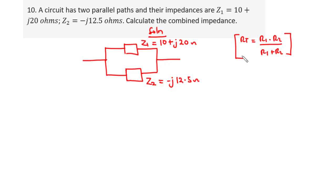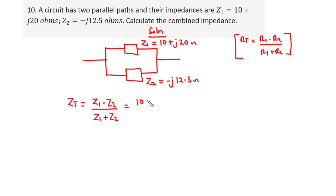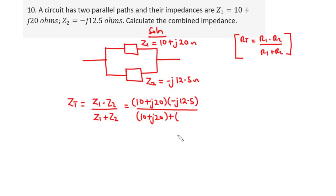The same applies to two impedances in parallel. So the combined impedance ZT is given by Z1 times Z2 divided by Z1 plus Z2. Let's input the values: Z1 is 10 plus J20, and Z2 is negative J12.5, divided by Z1 plus Z2, which is 10 plus J20 plus negative J12.5.